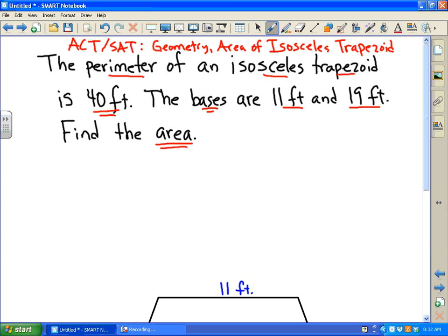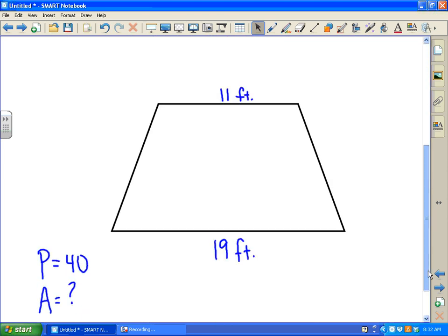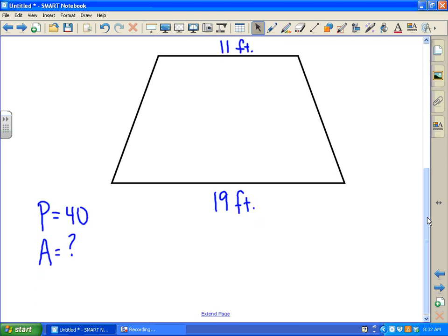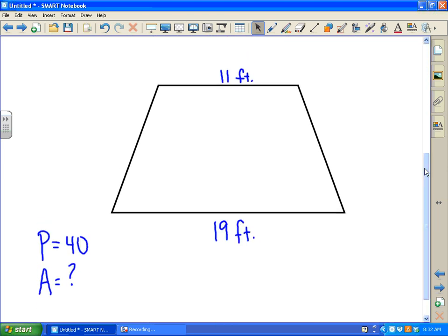So in this problem, it would be very helpful to draw an isosceles trapezoid. And we have one here. One of the bases is 11, the other one is 19. And we know the perimeter is 40.